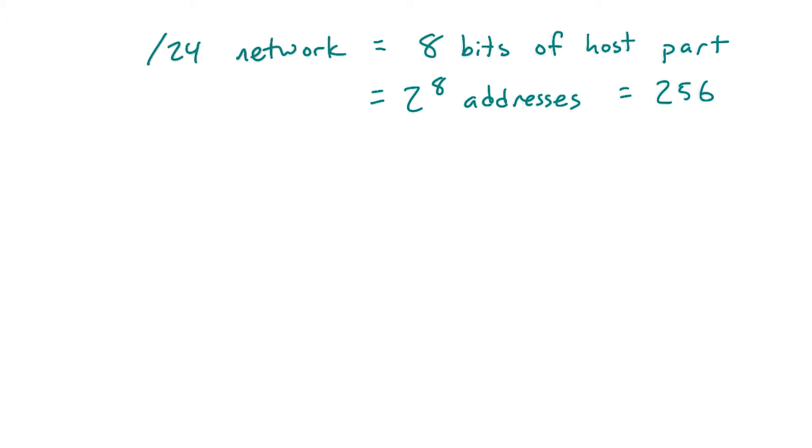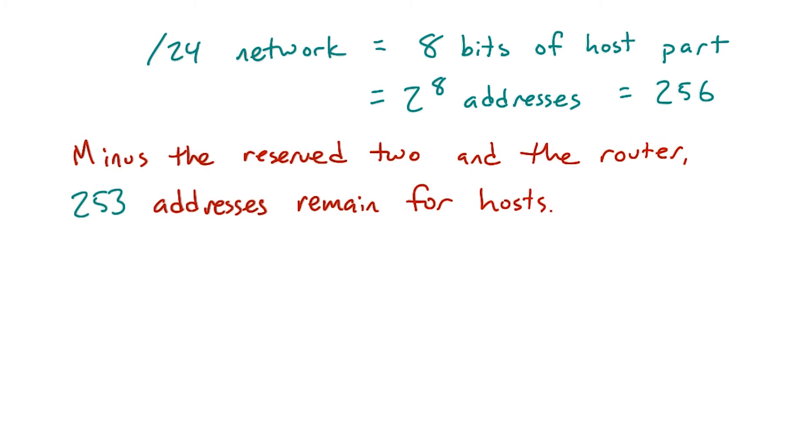Similarly, in a slash 24 network, there would be 256 addresses. But minus those three, there are usually about 253 addresses that remain for hosts.